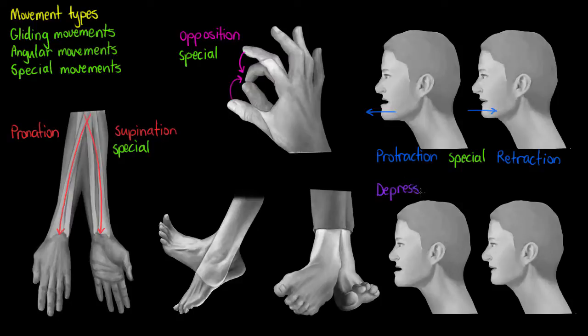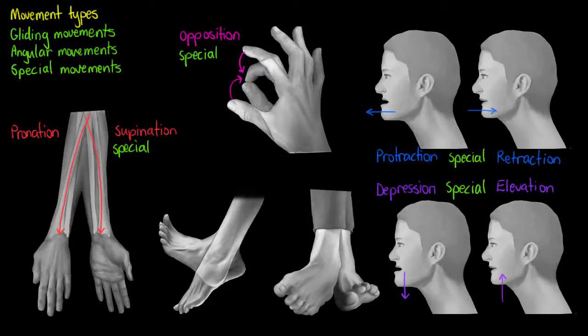The next movement illustrated here is called depression — the downward movement of the mandible. We are not creating an angle; we are just moving the entire bone itself downward. The opposite, elevation, is moving it upward, or more superiorly. We can also apply this to our scapula: when we shrug our shoulders we are moving our scapula superiorly, so we are elevating our scapula.